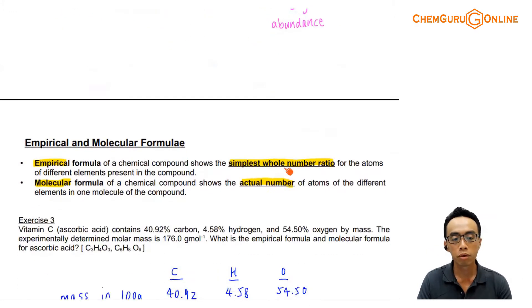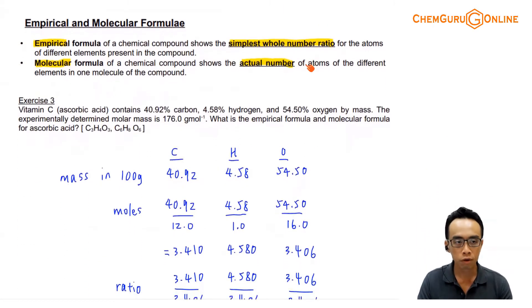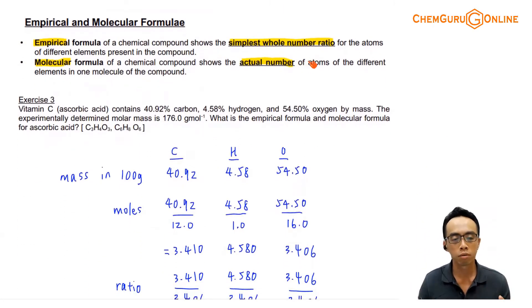Next, let us consider empirical formula and molecular formula. I would think that empirical formula will have some basis, because at secondary level we have talked about this before. Empirical formula is just basically working out the simplest ratio. That means if you have a particular compound and you have whatever number of elements, what is the simplest ratio for the atoms for all the different elements in a compound?